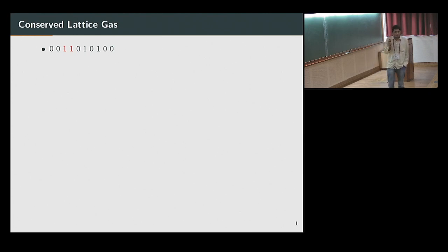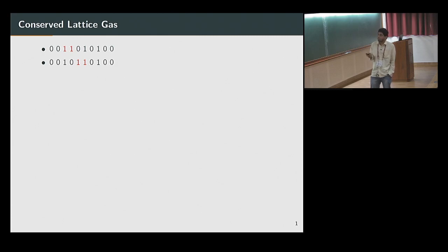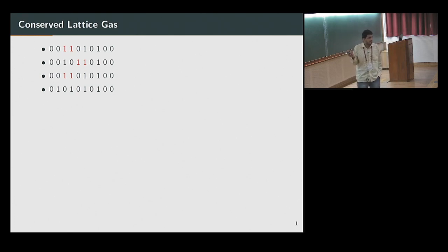Active particles can jump — they only have one free direction. This particle can jump here, or this particle can jump here, at rate one. So one of the moves starting from this configuration would be this particle jumps here. Now these two particles are active. Maybe this one jumps back, and now this one jumps here. Now you see all the particles are isolated.